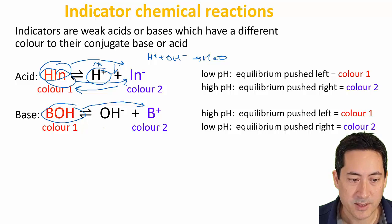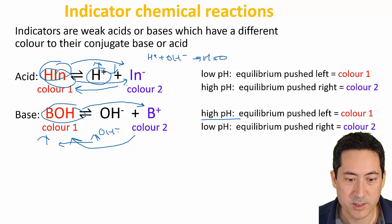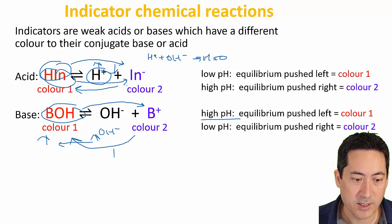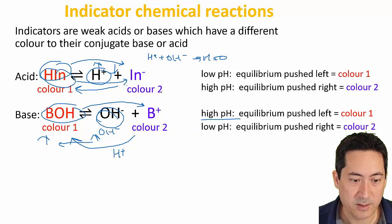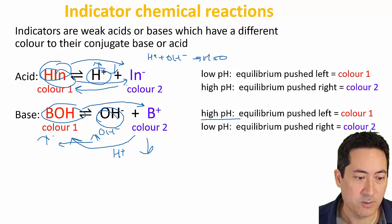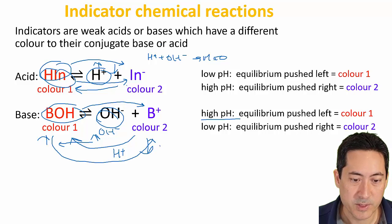In a similar sense, at high pH, increasing the OH- ions will push the equilibrium by Le Chatelier's principle to this side. At low pH, adding H+ will decrease this area, and so we'll get a color change from red to blue in this particular instance.